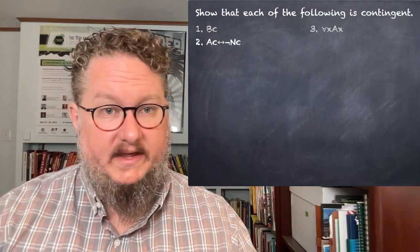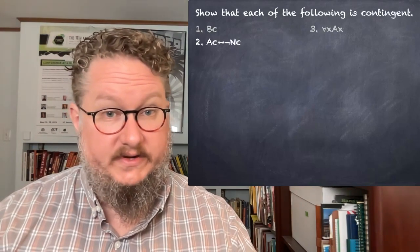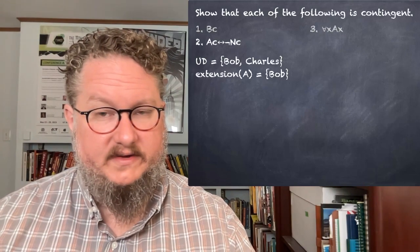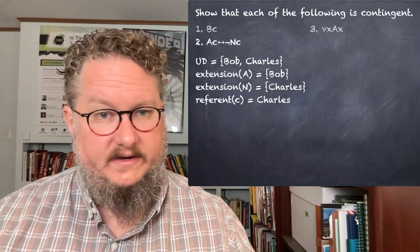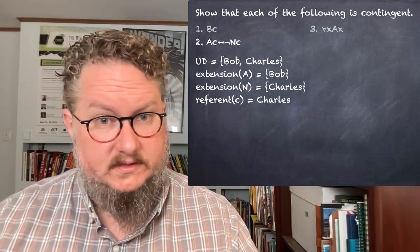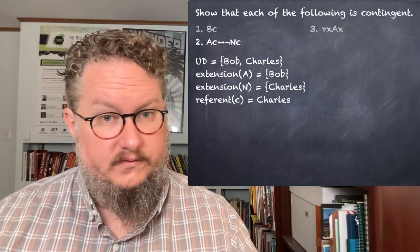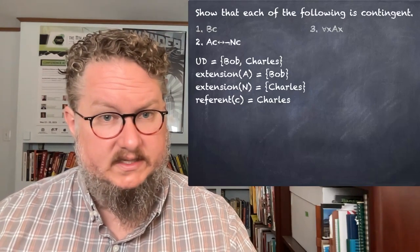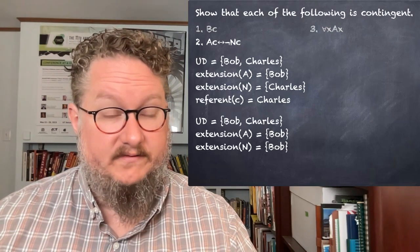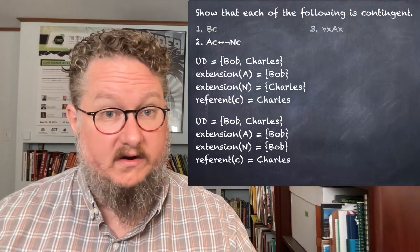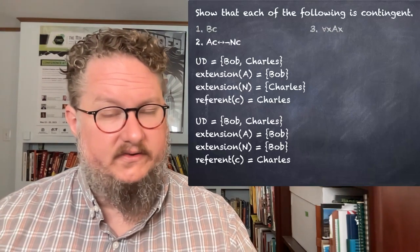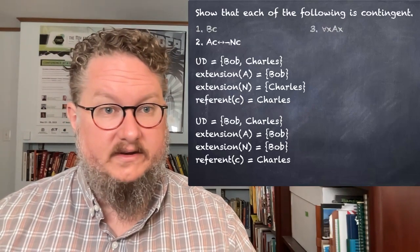For the slightly more complicated sentence AC ↔ ¬NC: on the first model, with extension of A being Bob, extension of N being Charles, and referent of C as Charles — AC is false because Charles is not in the extension of A; NC is true so not NC is false; we've got false on both sides of the biconditional, so it's true. On the second model, with Bob in both the extension of A and N, and referent of C as Charles: AC is false, NC is false, but not NC is true — false on the left and true on the right makes the biconditional false.